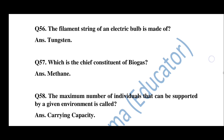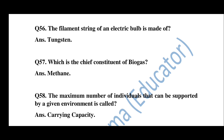Question number 56: The filament string of an electric bulb is made of — the answer is tungsten. Question number 57: Which is the chief constituent of biogas? The answer is methane.